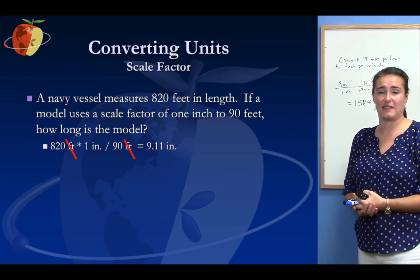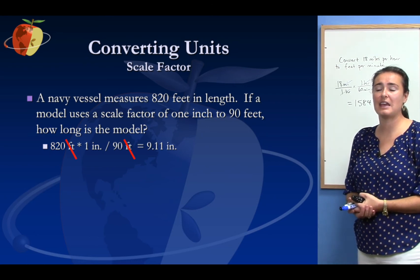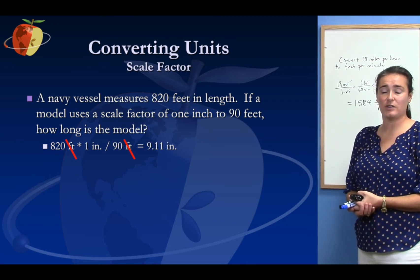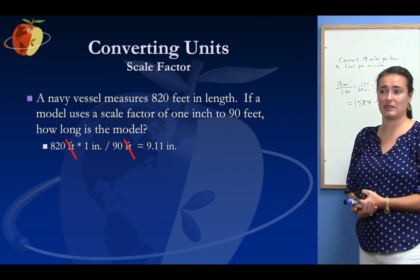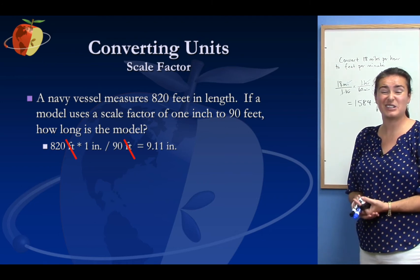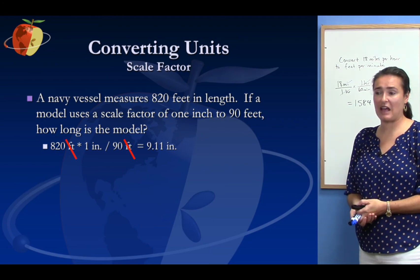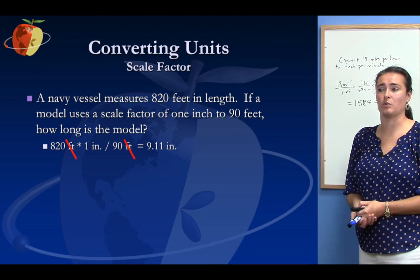The way we could calculate that to figure out how big the model would be is using dimensional analysis. 820 feet multiplied by 1 inch divided by 90 feet, so 90 feet in the denominator, is equivalent to doing 820 divided by 90. And if you do that on your calculator, you should get 9.11 inches.